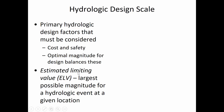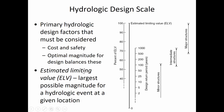The estimated limiting value is the largest possible event that could occur at a given location. A major structure like a dam, where there are homes downstream that would be affected by its failure, would be designed using 100% — maybe down to 70% — of the ELV. Even the 70% of ELV is more than a 500-year storm. We sometimes think we're providing a lot of protection by designing a drainage network for a 100-year storm. That's the design standard for a lot of interstate freeways. But think about the risk of a dam failing — a 1% chance every year — people simply wouldn't tolerate that.